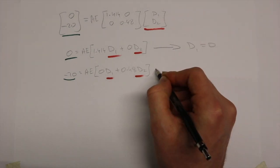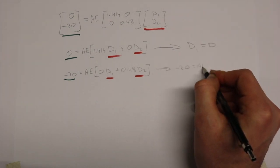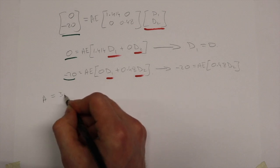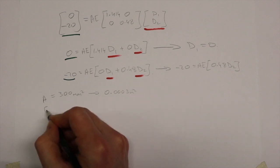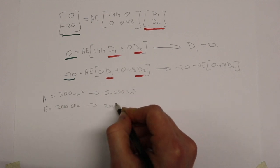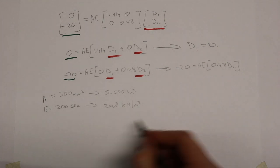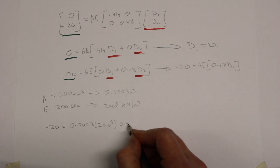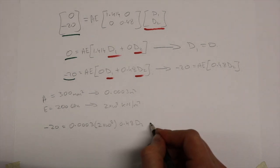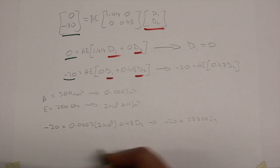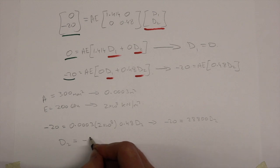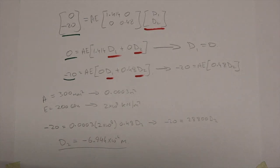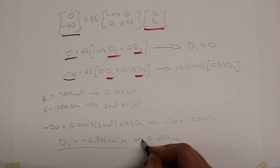Multiplying out the matrices we realize that D1 equals 0 but D2 will have a value. Using the values provided for A, the cross sectional area as 300mm squared and E, the stiffness as 200 GPa. Bringing units into order we get minus 20 equals 28800 by D2. Therefore D2 equals minus 6.944 by 10 to the minus 4 meters or 0.6944 millimeters of deflection.